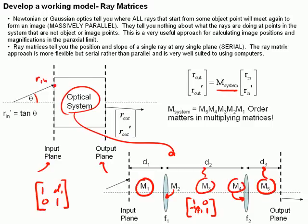Notice the first matrix is the last one in our physical system. And there's a simple reason for this. It's because the output position and output slope are given by the matrix times a vector consisting of the input position and the input slope over here.